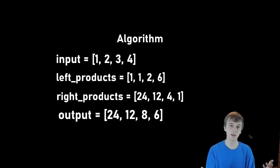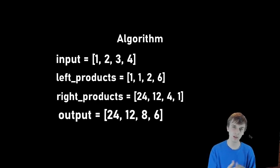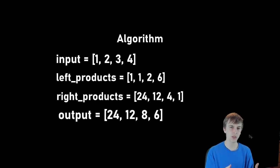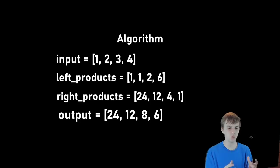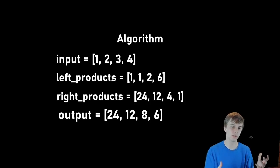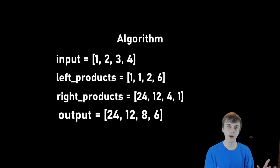So we do 24 times one = 24, 12 times one = 12, four times two = eight, and six times one = six. That is the exact answer we wanted, so this algorithm clearly works. It's a really good algorithm — three separate loops, so it's O(3N). It does have some extra space since we have those extra arrays, but it's still a good algorithm with good time complexity and it doesn't use division.